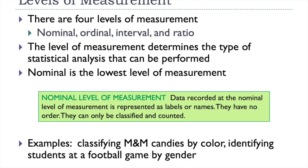The last part of chapter one is going to talk some about the levels of measurement, nominal, ordinal, interval, and ratio. And depending on what type of measurement we have, it's going to determine the type of statistical analysis that we can perform on our data.